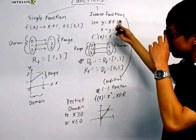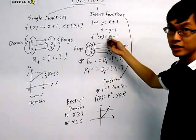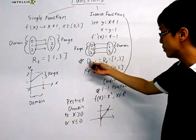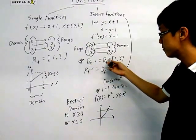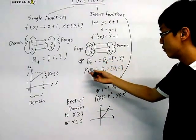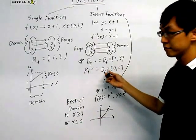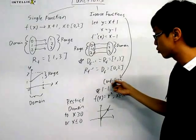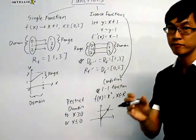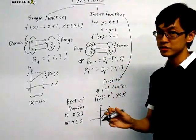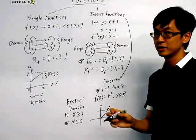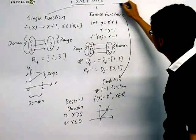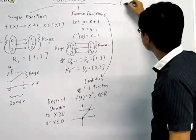So for inverse functions: first, you need to know how to find the inverse. Secondly, you need to know the properties — domain of f inverse is the range of f, and range of f inverse is the domain of f. And last but not least, very importantly, you need to know the condition for f inverse — for the inverse function — to exist. And we finally come to the last type of function, which is called composite functions.